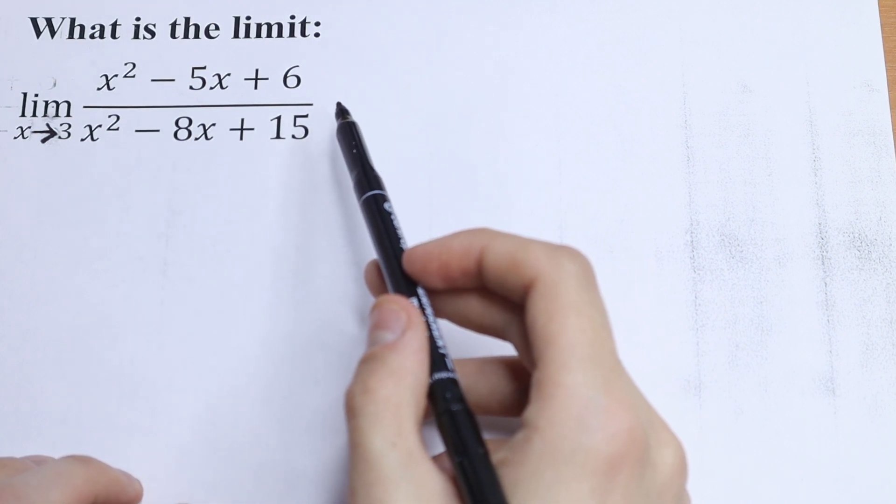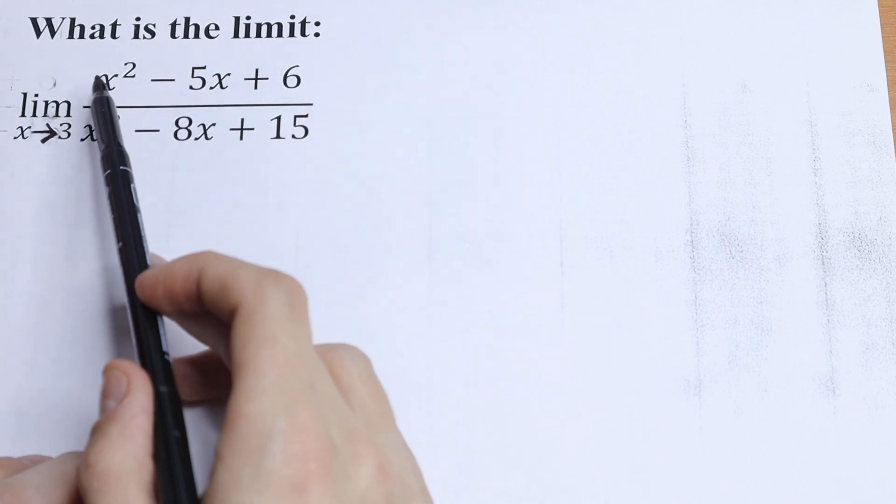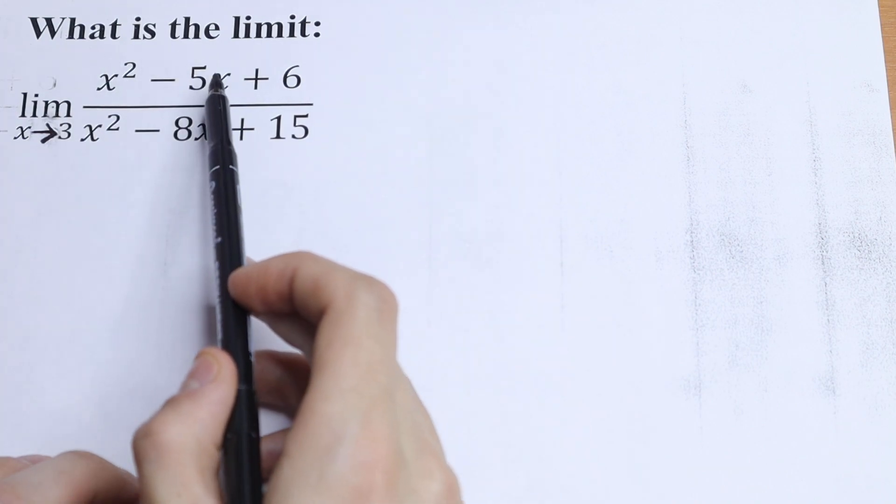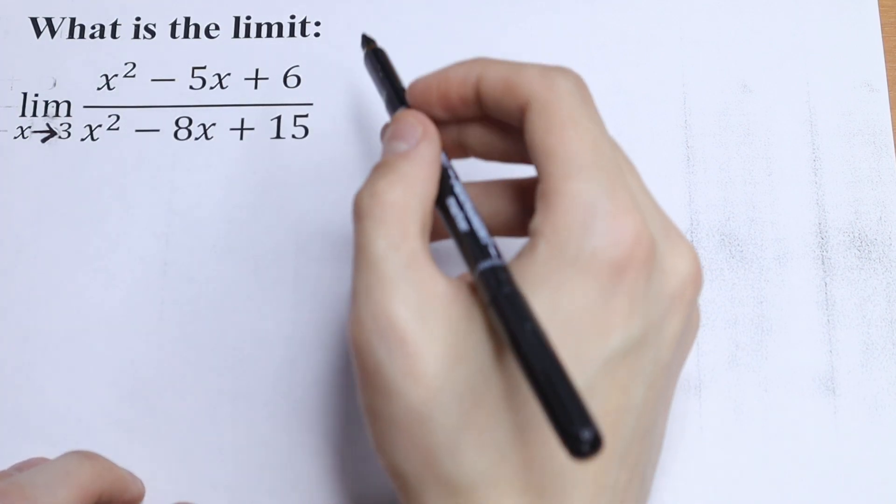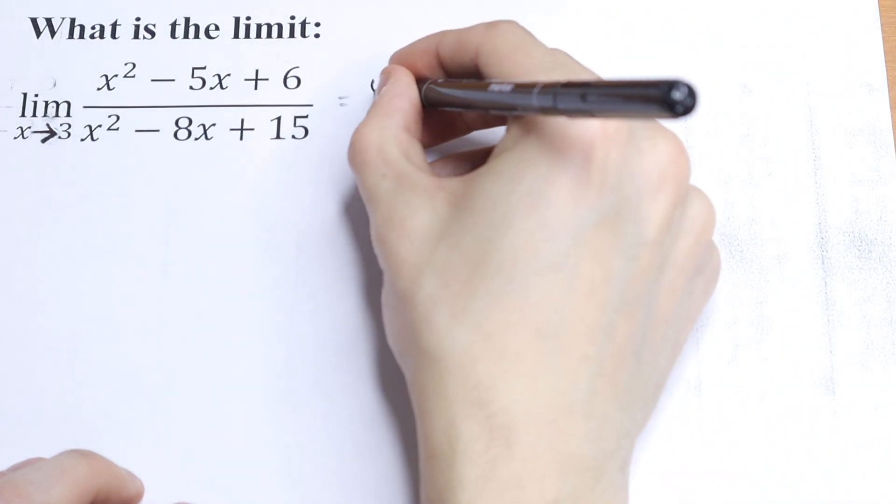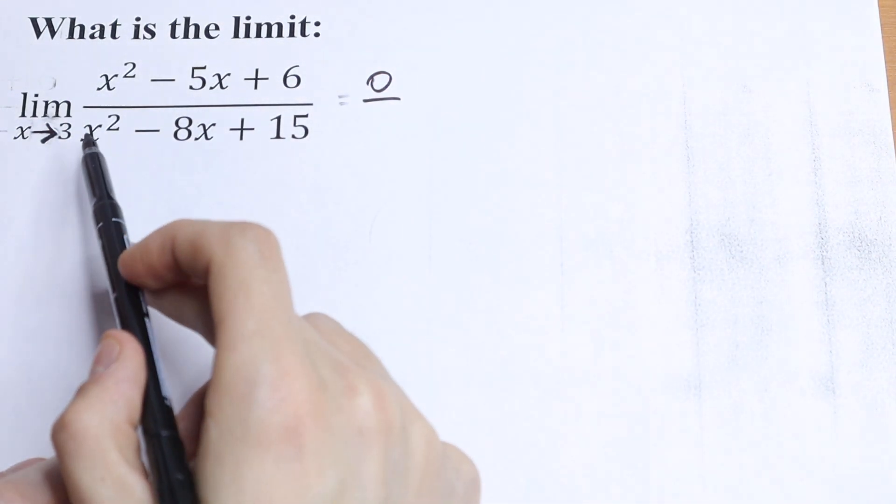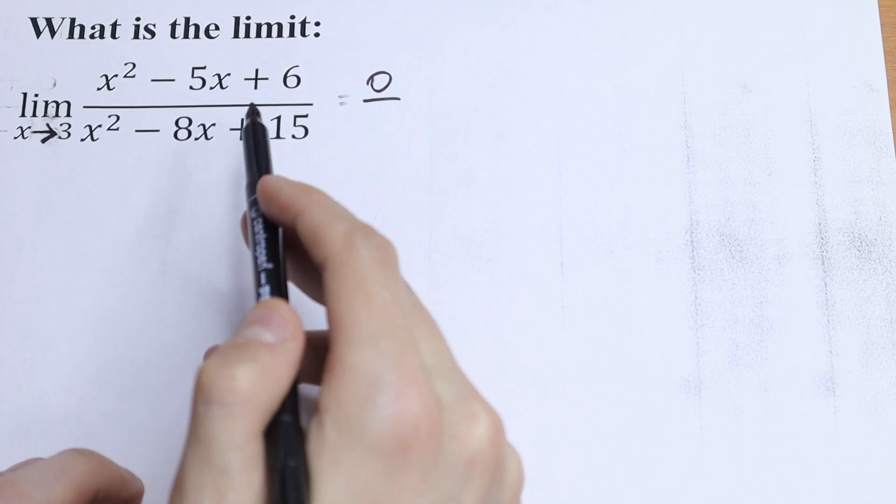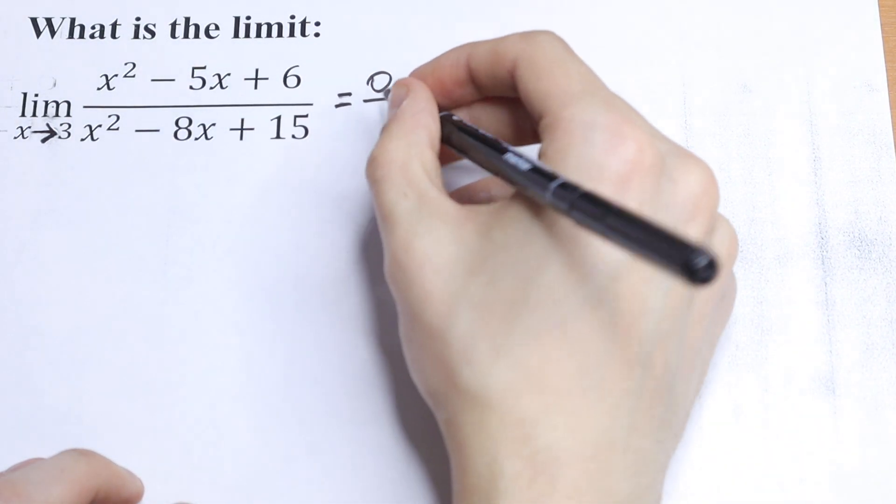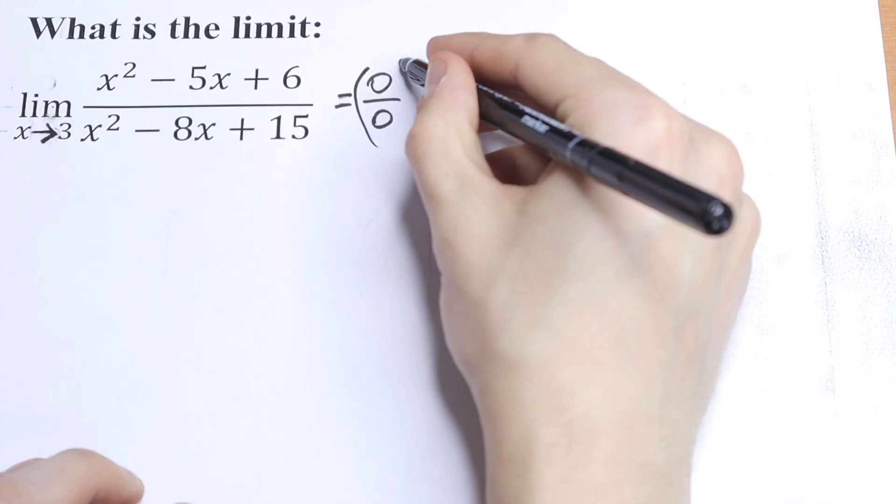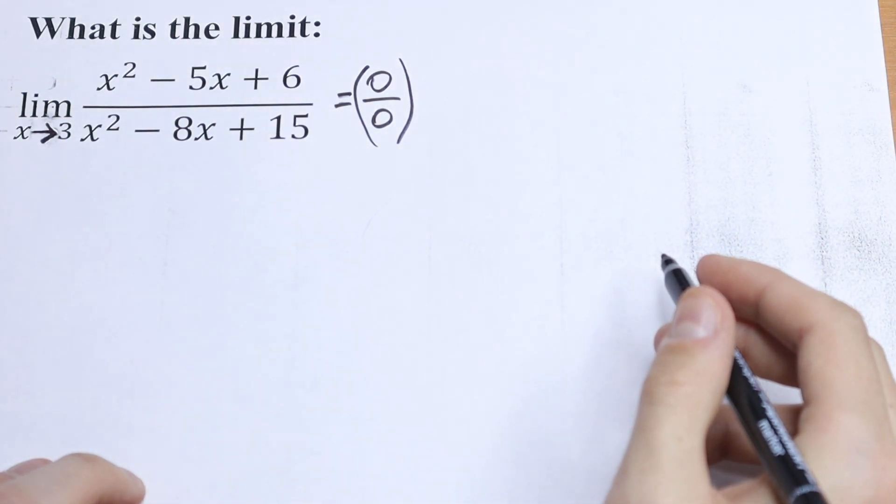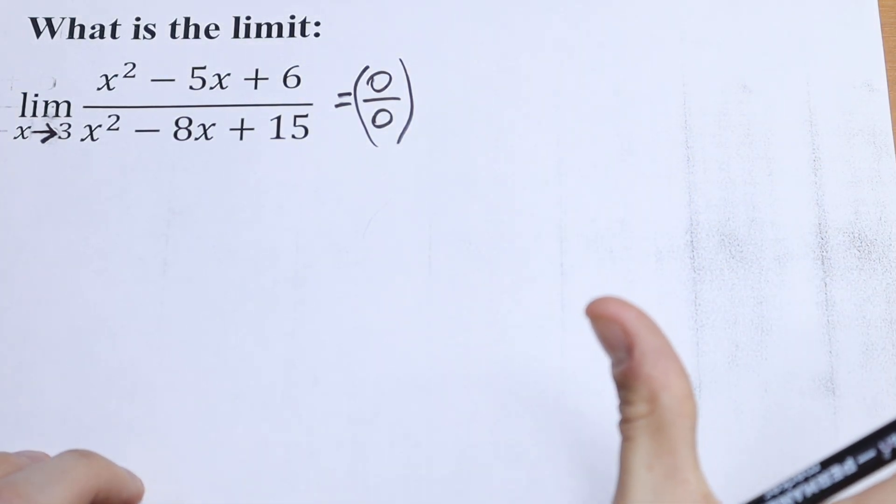One way is to use direct substitution. So let's do this. We will have 3 square, 9 minus 15 plus 6, it will be 0. And in our denominator we will have 9 minus 24 plus 15, it will be 0 as well. So 0 over 0 is undefined. So we don't know what the value is that represent.